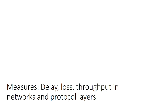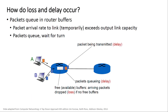During this connection there may be delay, loss, and we're interested in throughput. Packets queue in router buffers when the packet arrival rate temporarily exceeds the output link capacity. Packets wait for their turn. If the rate is not too high the router sends packets directly with no queue, but if demand is too large a queue builds up. Routers have a finite buffer — arriving packets are dropped if no free buffers are available. This is the kind of thing that happens during denial-of-service attacks.